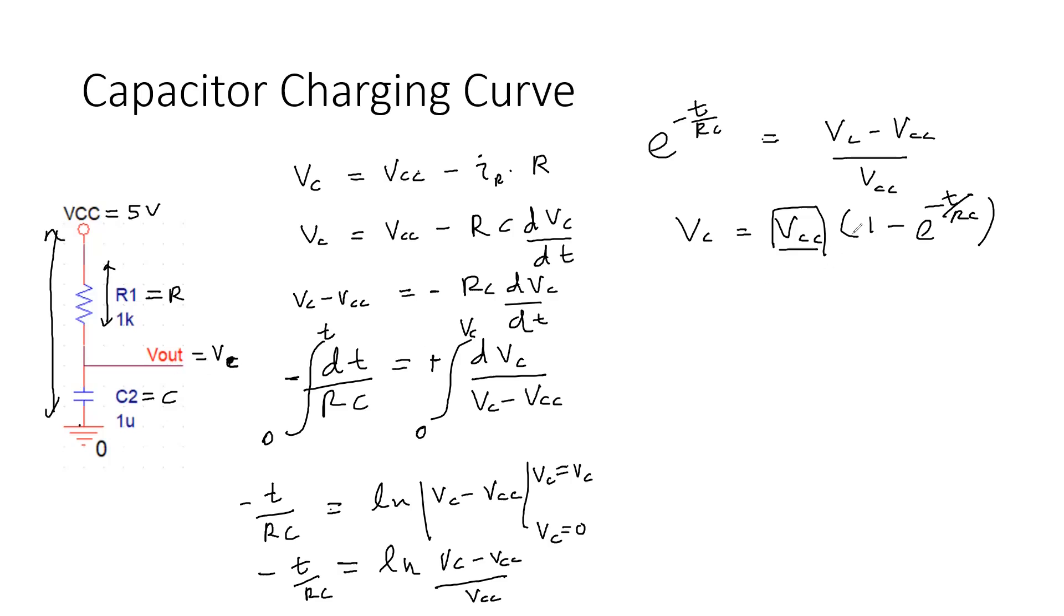If we try to plot this one, this is my time axis and this is my voltage axis. Over time this will be increasing and after that it will reach a saturation level. This is VC voltage.